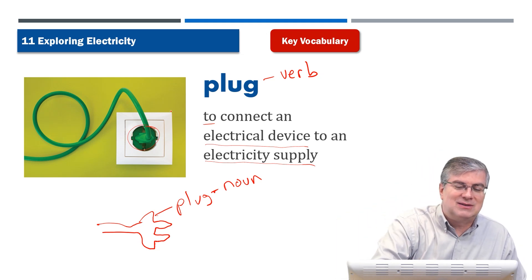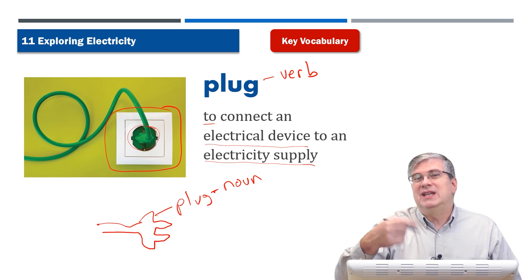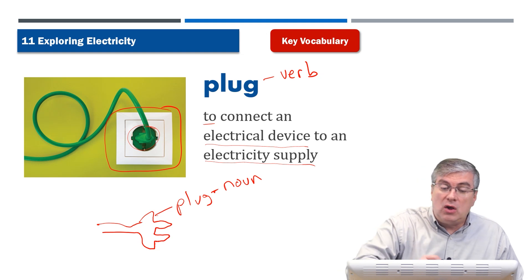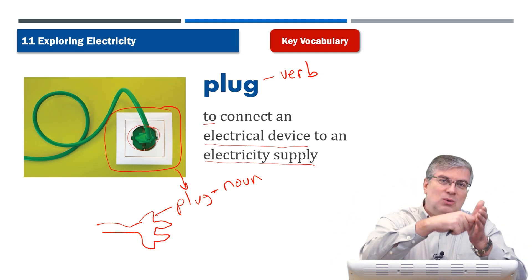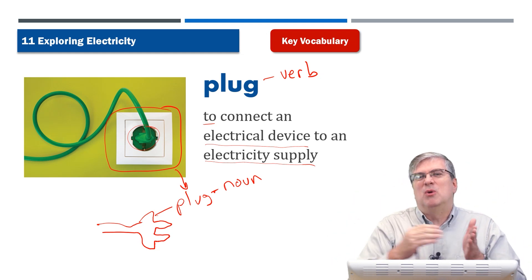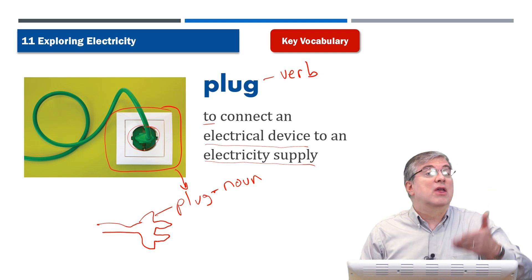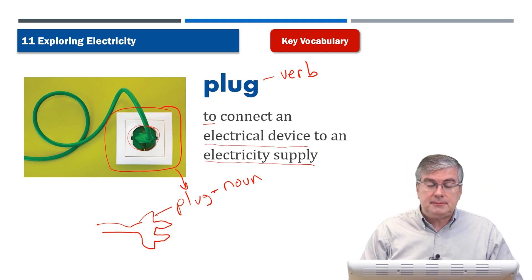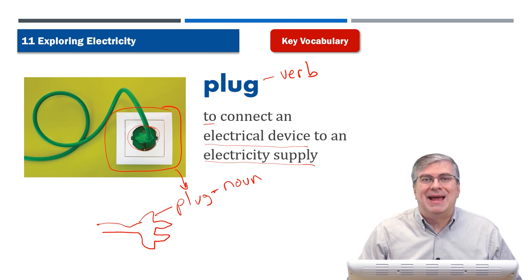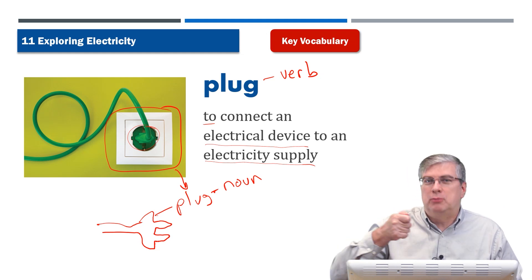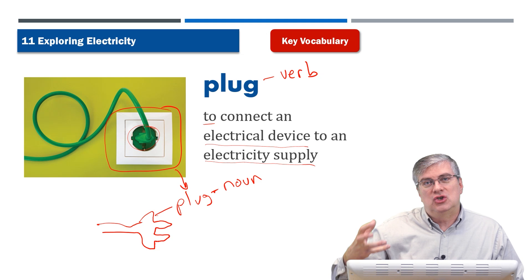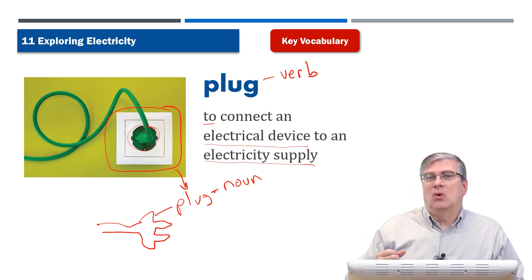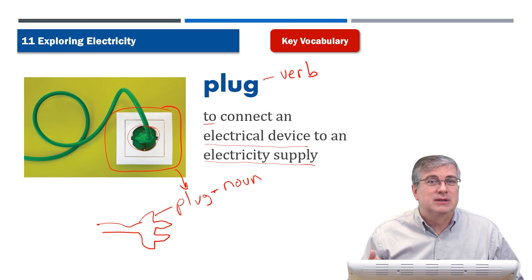The thing in the wall we usually call an outlet, but many people also call it a plug. So sometimes you put a plug into a plug. Plug can have many meanings — it means to put an electrical device into a plug in the wall so that your vacuum cleaner, computer, or whatever electrical device it is gets power.